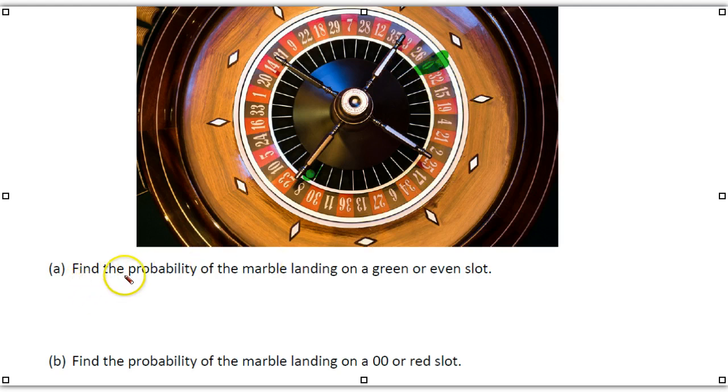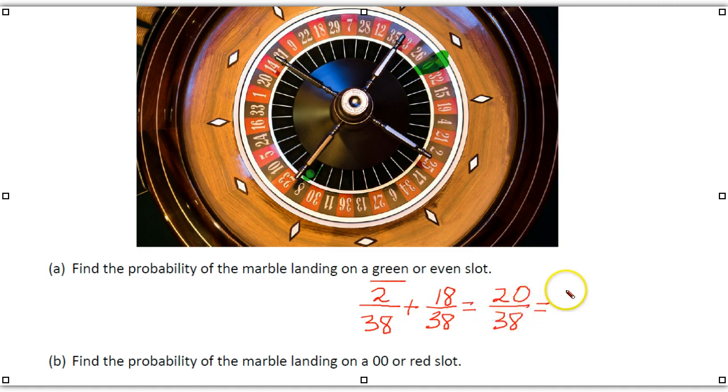Find the probability of the marble, this marble landing on a green. So, again, on the green would be the double 0 and the 0. So, there would be 2 out of 38 slots for that. And on an even slot, and we said there were 18 of those, of the 36 numbers are even. And that's out of 38 also. So, that gives you 20 out of 38, which can be simplified to 10 out of 19.